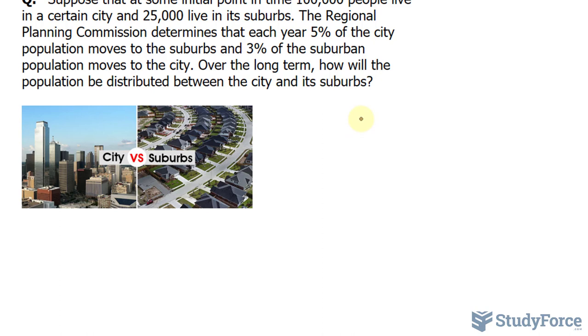The first thing that I want to do is represent these percentages in a matrix. So we have the current state, state 1 of the city and the new state of the suburb. And similarly, state 1 of the city and state 2 of the suburb.